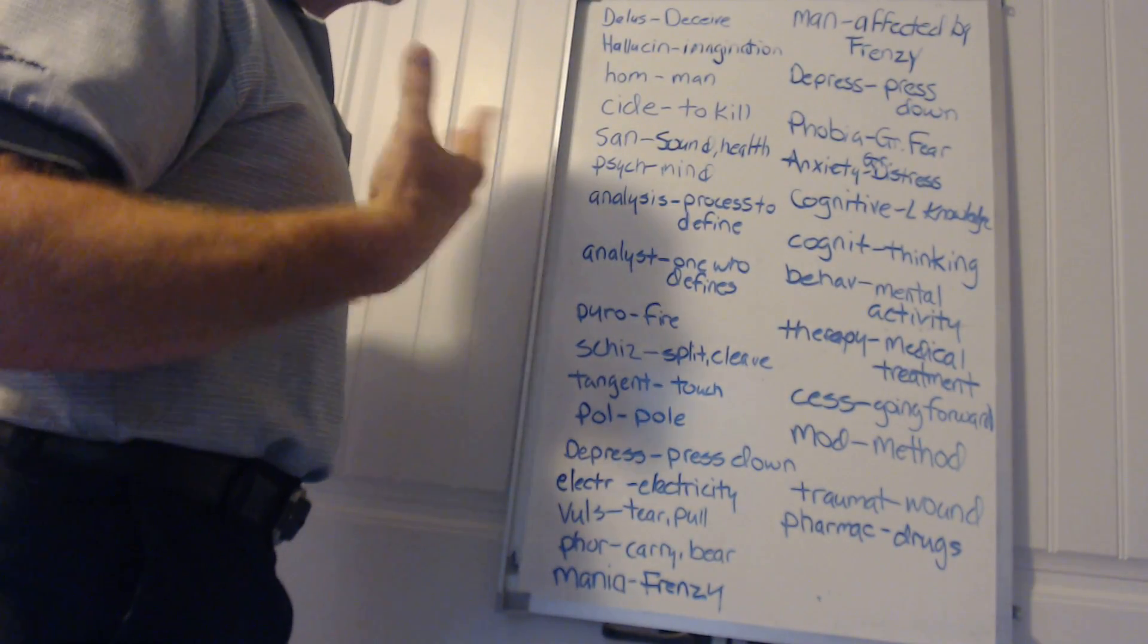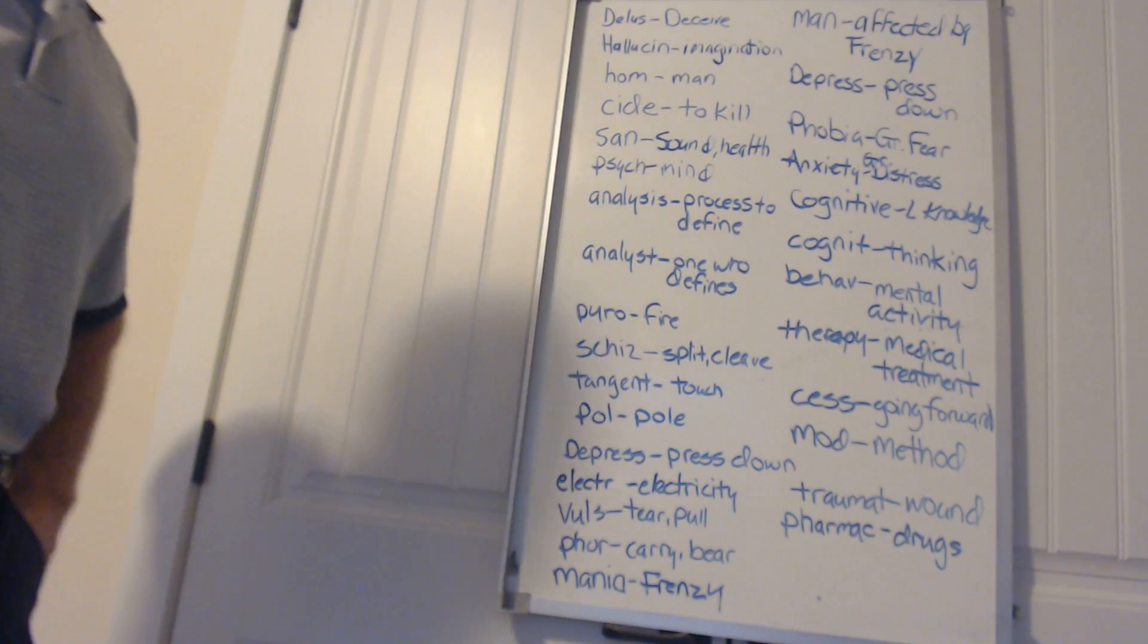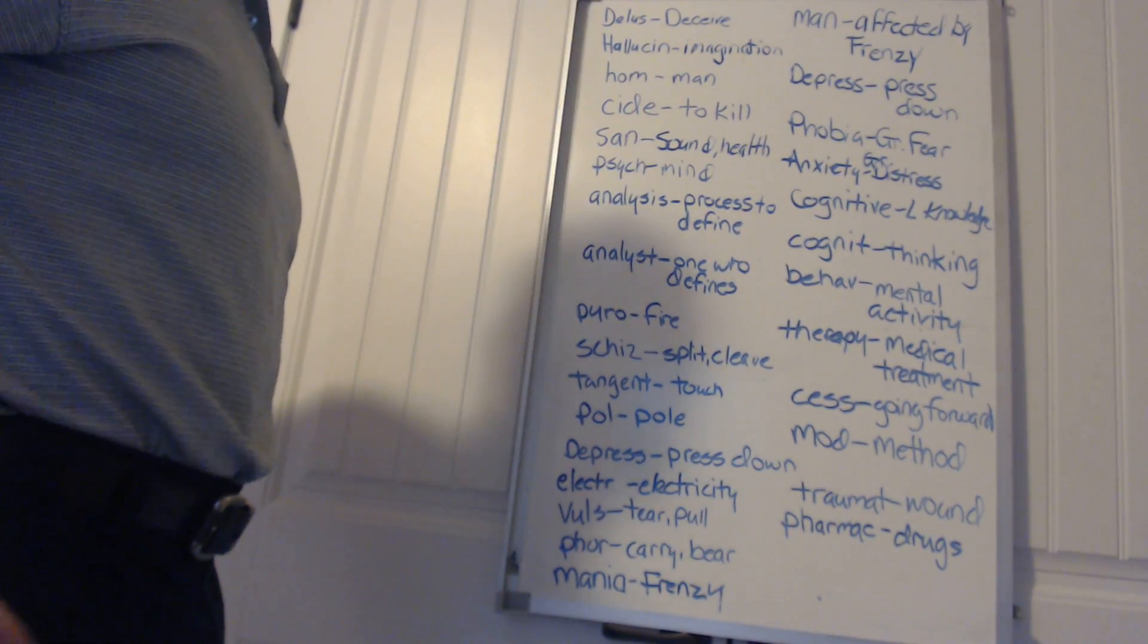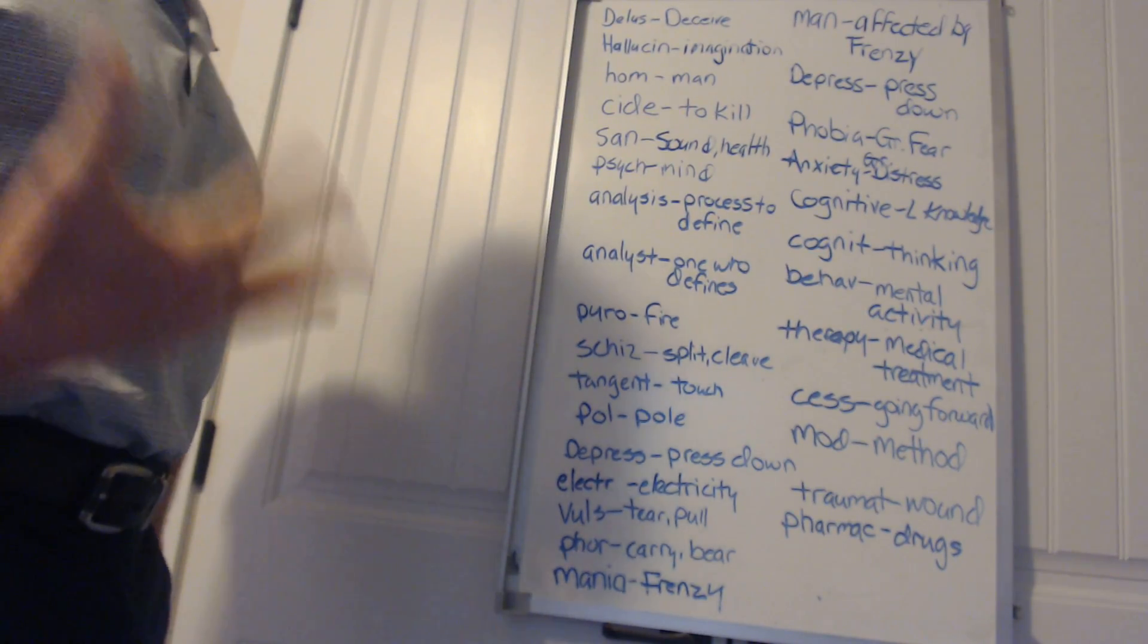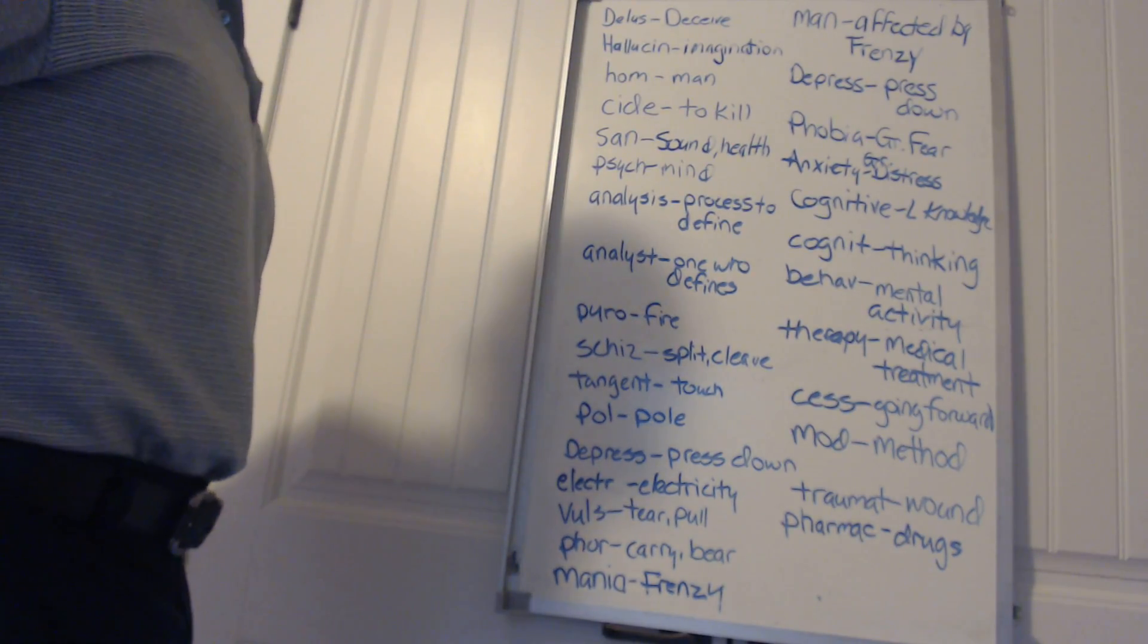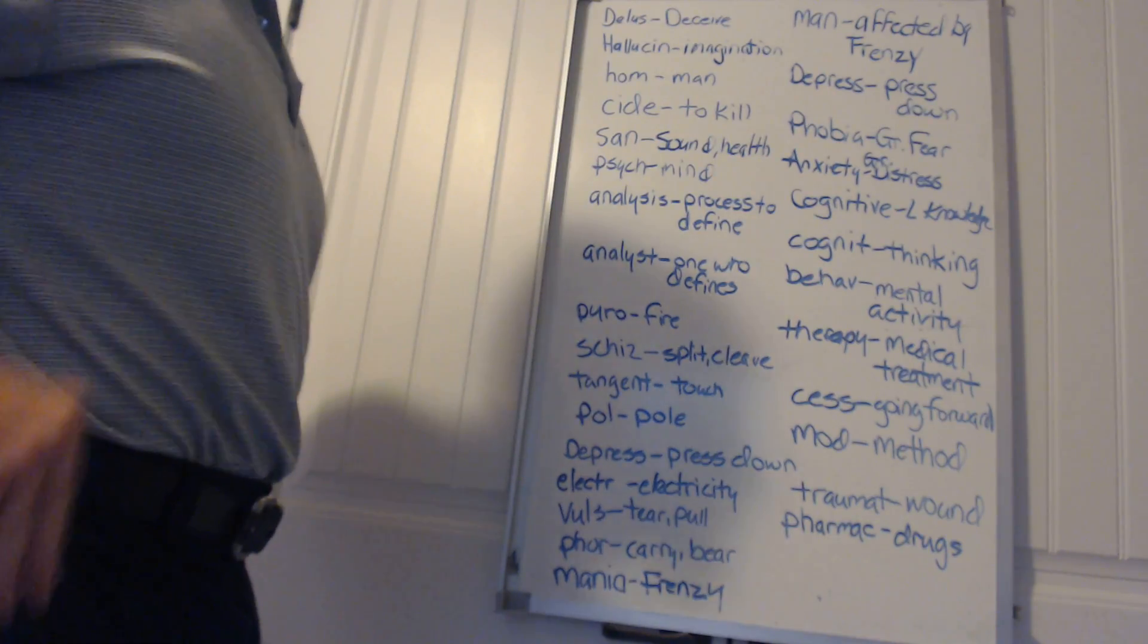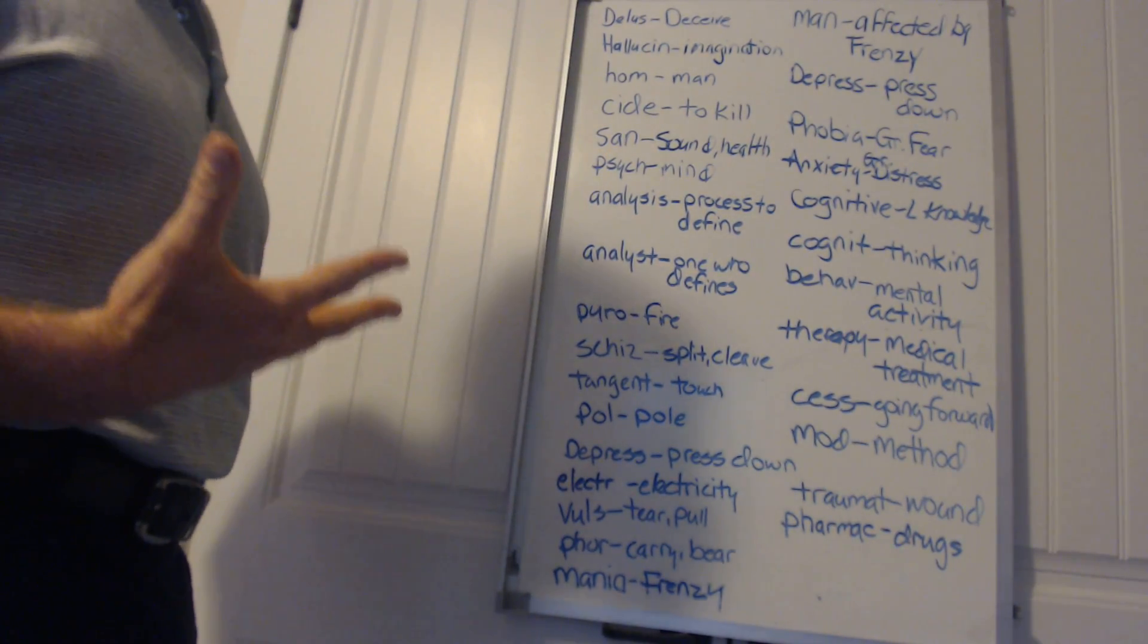The first root is delus or deluso, meaning to deceive. If somebody is delusional, they may be deceiving themselves or others around them. Hallucin or hallucino means imagination. If somebody is experiencing hallucinations, they may have a tremendous imagination for what's going on inside their head, reflecting it to the outside world.